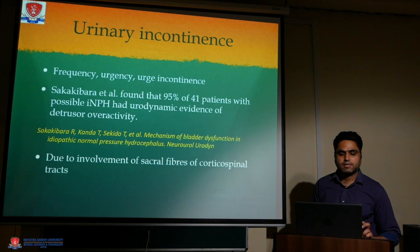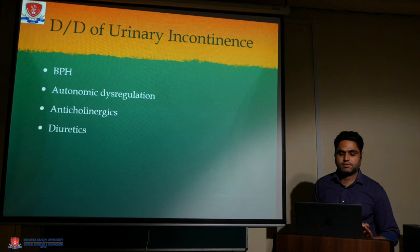Urinary incontinence frequently manifests as frequency, urgency, and urge incontinence. Sakakibara et al. found that 95% of 41 patients with possible idiopathic NPH had urodynamic evidence of detrusor overactivity, due to involvement of sacral corticospinal tracts. Differential diagnosis of urinary incontinence includes BPH, autonomic dysregulation, anticholinergic risk, and diuretics.